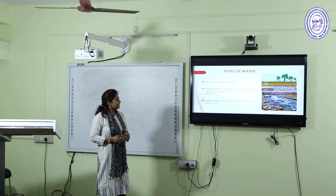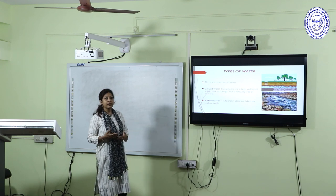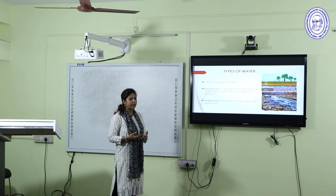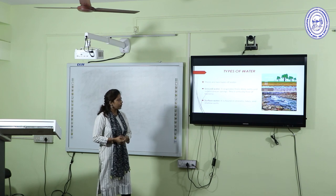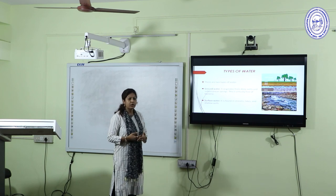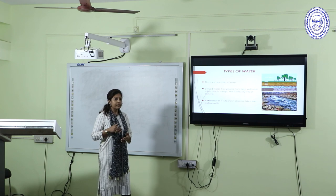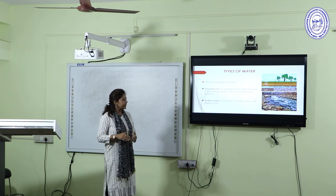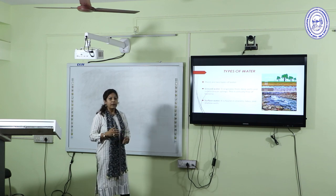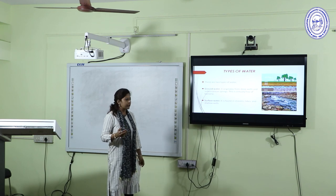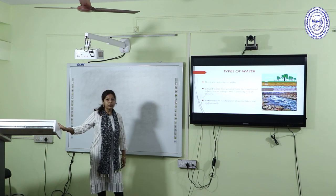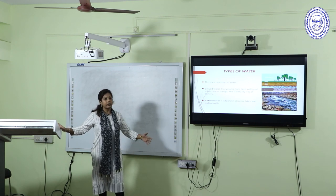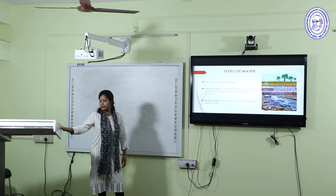Moving on to the types of water, or sources of water from where we get water to drink or use in daily activities. Water can originate from groundwater, which is generally obtained when we dig deep wells. The soil functions as a filter and therefore groundwater is virtually free from microbes. Surface water is generally the water we get from streams, lakes, and shallow wells.